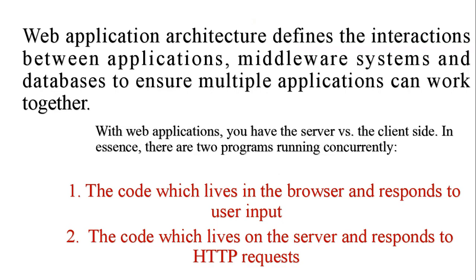First we need to know about web application architecture. This architecture mainly involves the concept of interactions between applications, middleware systems, and databases, which ensures that multiple applications can work together. Web applications like PHP, Python, and Java use middleware — software used to enable communication and management of data in distributed applications, which works on the transport layer of the TCP/IP layers.